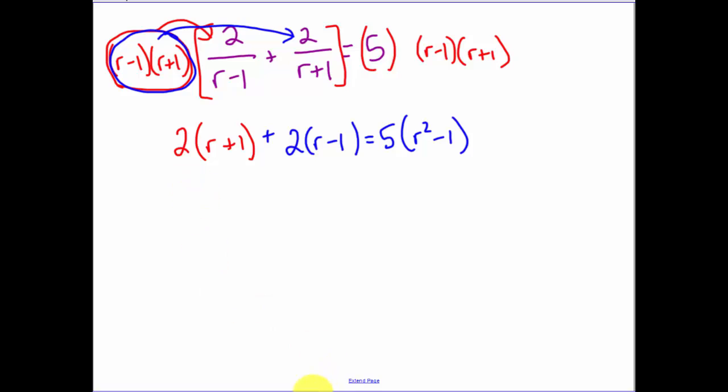Now multiplying all this stuff out, we have 2r + 2 + 2r - 2 is equal to 5r² - 5. Get one side to be zero.